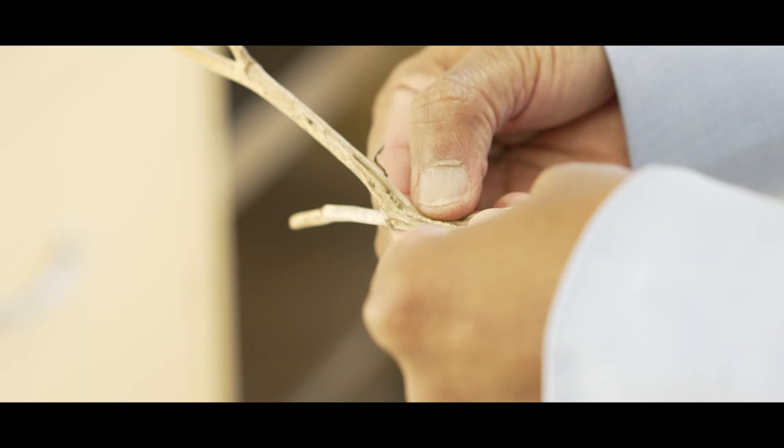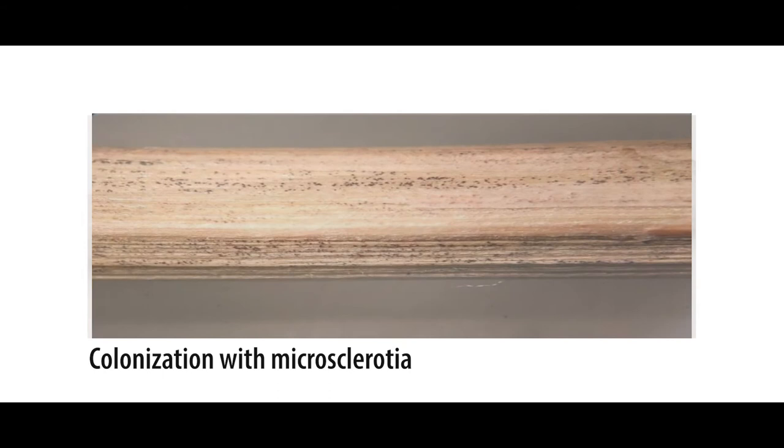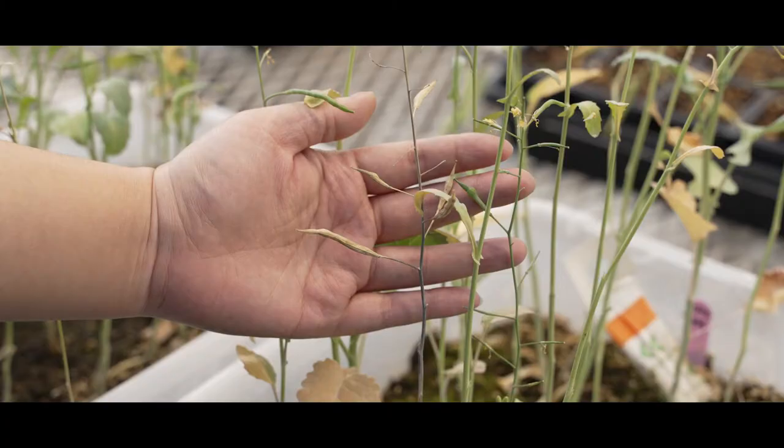Likewise, microsclerotia produced in the stem base and roots cause the tissues to turn gray, then black, and can cause the lateral roots to eventually break down.